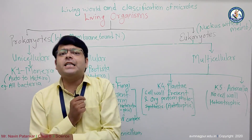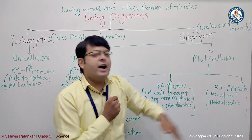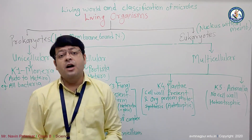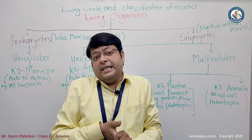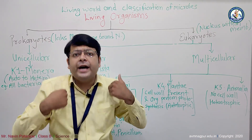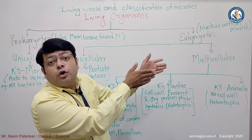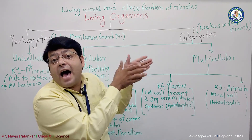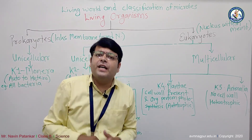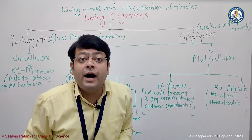Kingdom Five is Animalia — eukaryotic and multicellular organisms. There is no cell wall present in animals, and they are all heterotrophic. We humans also come under this fifth kingdom group, Animalia. These are all five kingdoms: Monera, Protista, Fungi, Plantae, and Animalia.